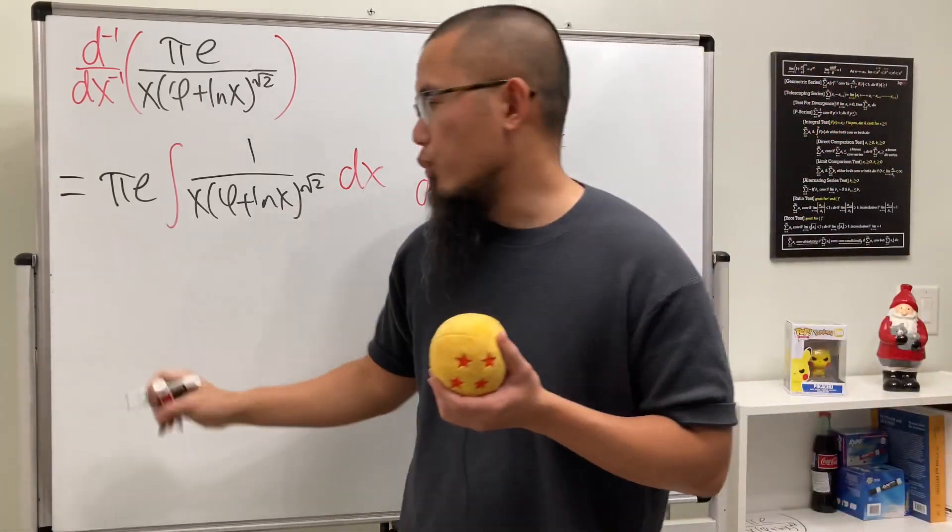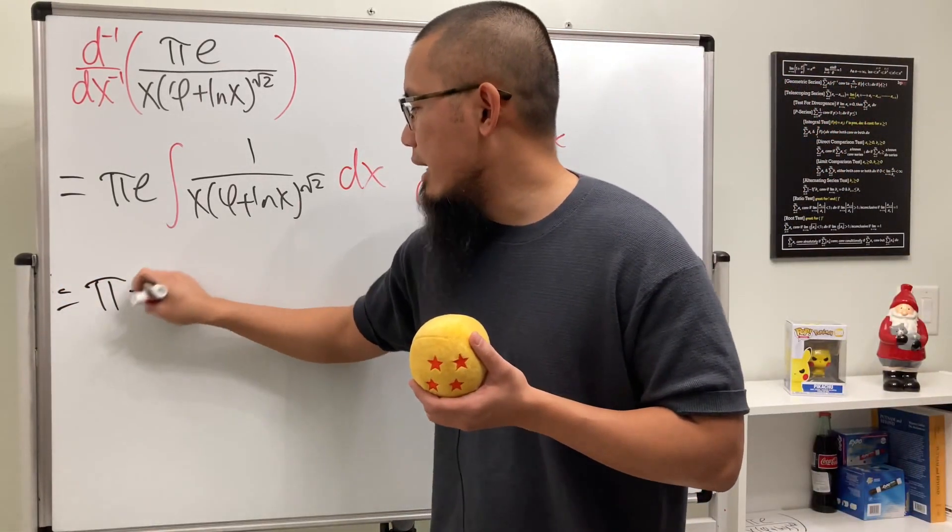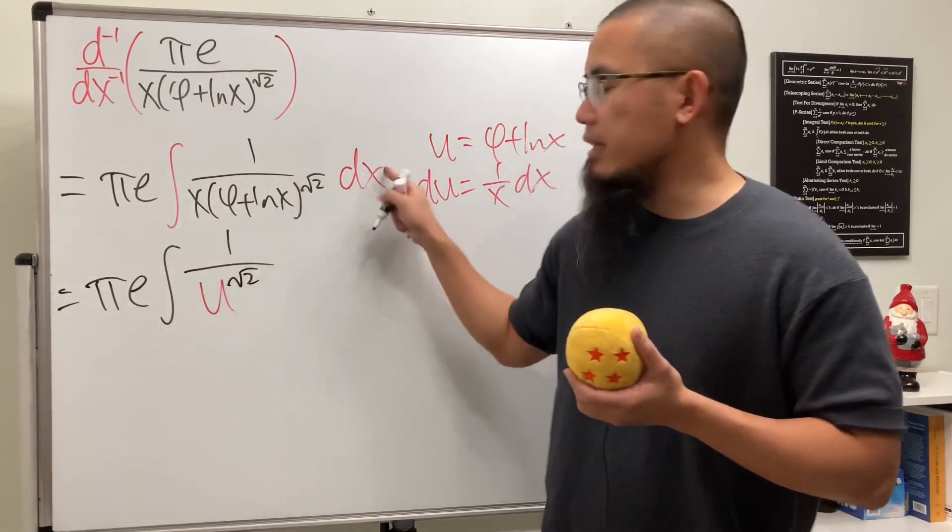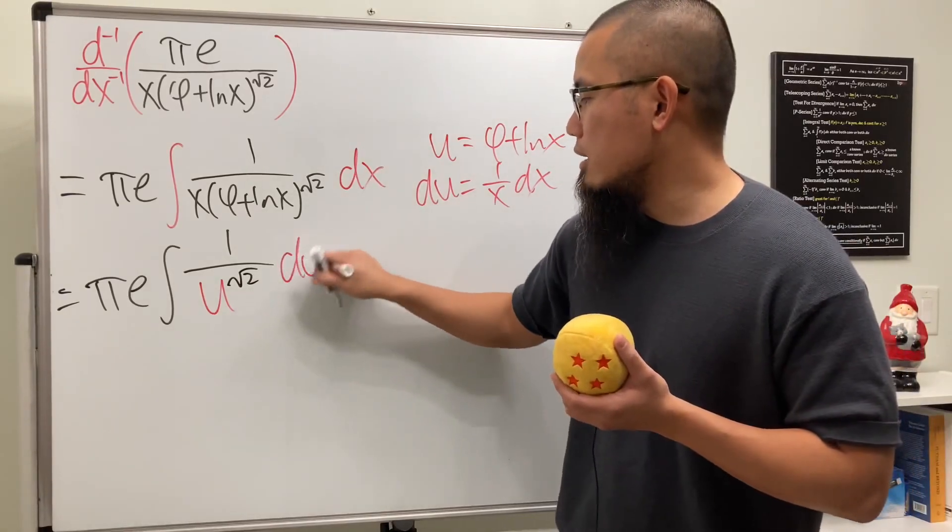So we can take this to the u world. So we get pi e and then the integral of 1 over, this right here is the u, and then we have the square root of 2 power, and then this and that together will just be the du.